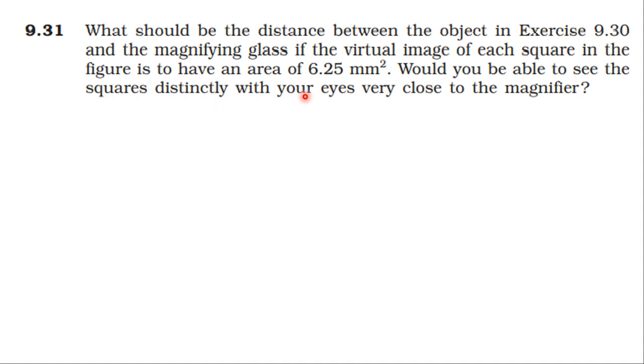So if you know the magnifying glass principle, object placement, virtual image forms on the same side. Now the object size, area of the object is one millimeter square from 9.30. The image area is 6.25 millimeter square, which we have to see here. The object square is 1 millimeter square, the height of the object is 1 millimeter square.